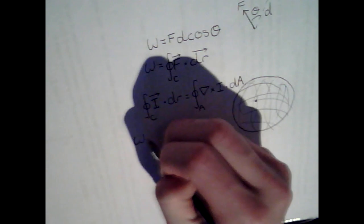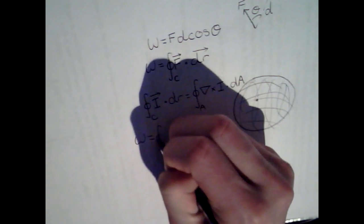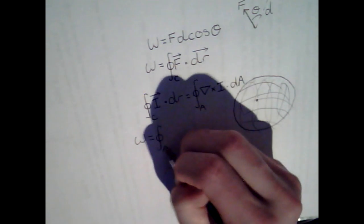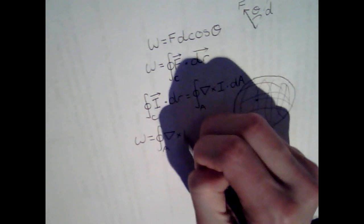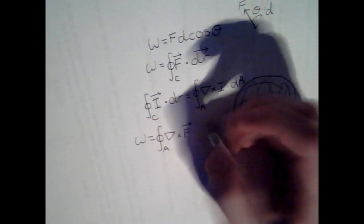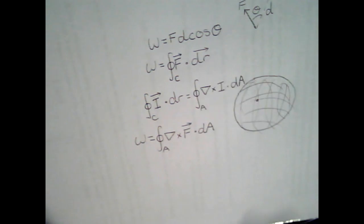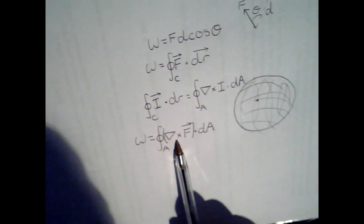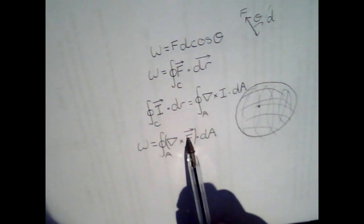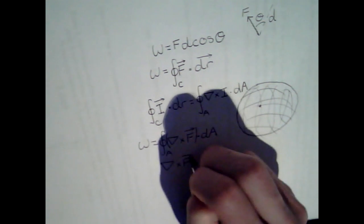We now know that the work equals the closed surface integral of the curl of f, dot d a. You'll probably know what I'm going to do right now. The curl of f, because f is radial, the curl of f is zero.